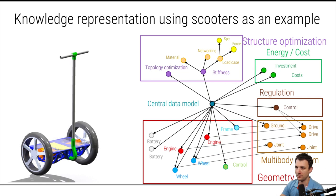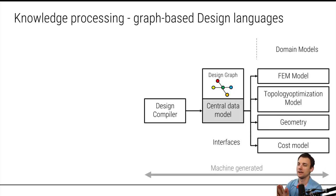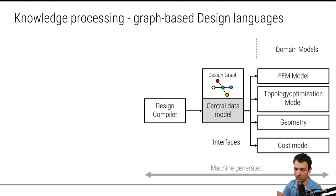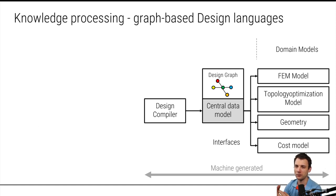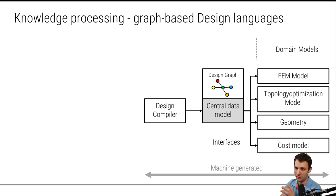Back to the scooter: we have the central data model in the middle, and you put all this information into there. To build it, a so-called design compiler is used — I didn't build the design compiler, but I was using it. The approach is that the design compiler builds your central data model, and from that model you have model-to-text transformations which build your domain-specific models. The domain models could be a finite element model, a topology optimization model, CAD models, cost models, something in MATLAB — different domains, different models, all sourced from this central data model.